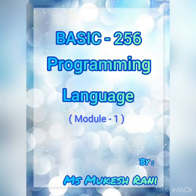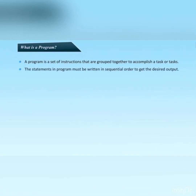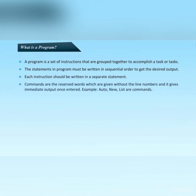The language used by programmers to write computer programs is called a programming language. The people who create these programs are known as programmers or coders. A program is a set of instructions grouped together to accomplish a task. The statements in a program must be written in sequential order to get the desired output. Each instruction should be written in a separate statement.